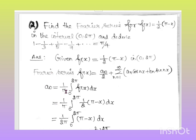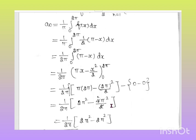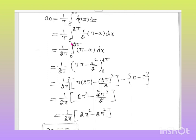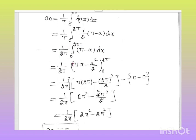a₀ = (1/π) ∫₀²π f(x) dx = (1/π) ∫₀²π ½(π - x) dx = (1/2π) ∫₀²π (π - x) dx. Integrating π - x gives πx - x²/2, with limit 0 to 2π.